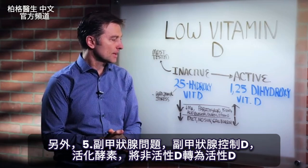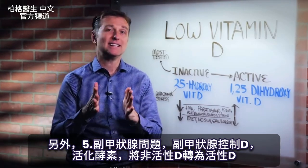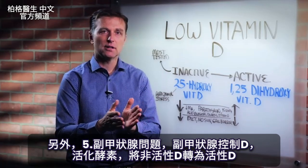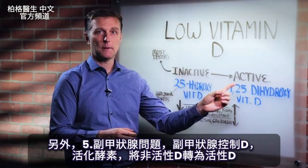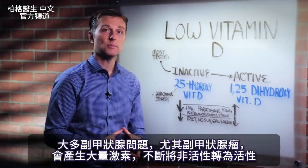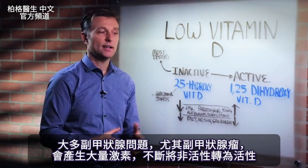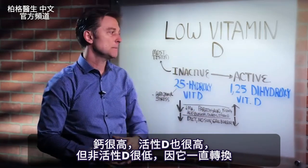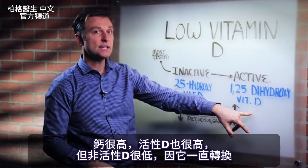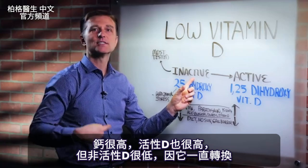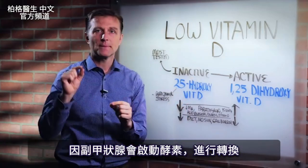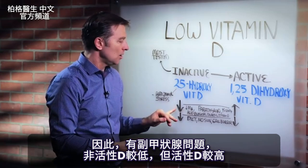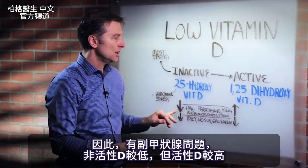Another situation involves the parathyroid. The parathyroid controls vitamin D — it actually activates an enzyme to convert the inactive to the active form. With most parathyroid problems, especially a tumor in the parathyroid, a lot of that hormone comes out, creating this conversion constantly. So they have high levels of calcium and very high levels of active vitamin D but very low inactive, because the parathyroid gland triggers an enzyme to make this conversion. So with a parathyroid problem you'll have low inactive but high active.